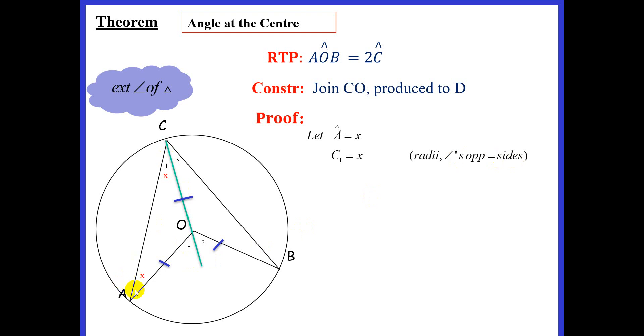Now, if C1 is X and angle A is X, we know O1 is the exterior angle. So O1 is equal to 2X, X plus X. And the reason for that is exterior angle of a triangle.